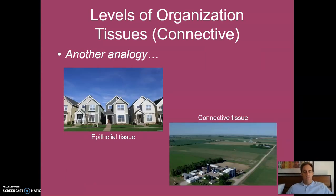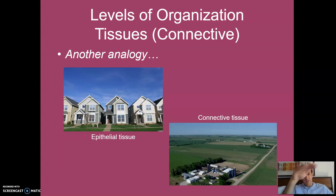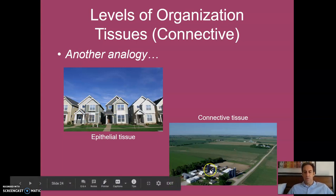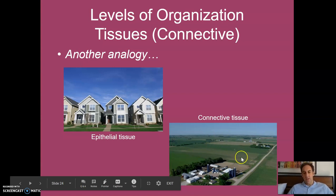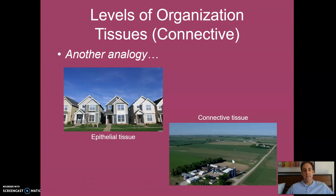Another analogy would be to think of it like houses. In epithelial tissue, those cells are really stacked next to each other — like houses in a suburban or urban setting, packed close together. In connective tissue, it's more like a rural setting where you've got a house, then a whole lot of space, then another house. In this analogy, all that space would be the matrix, and the little farms would be the cells.